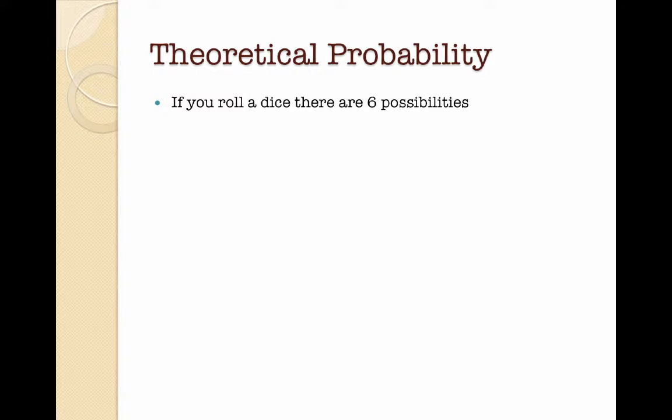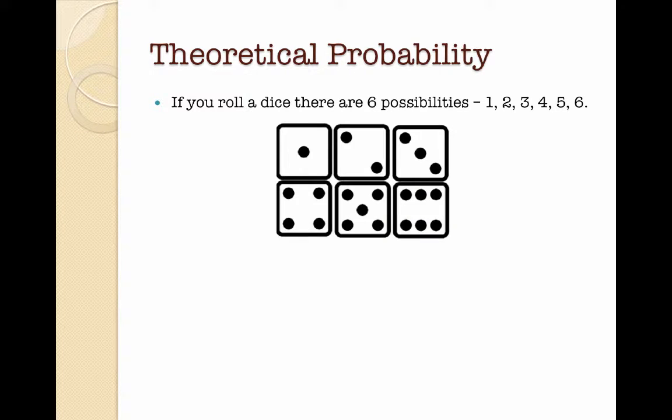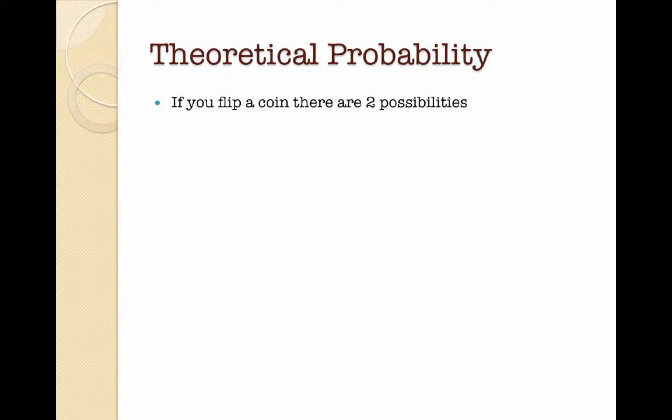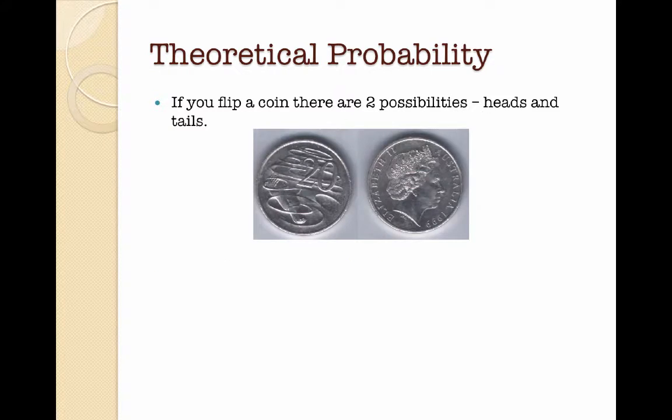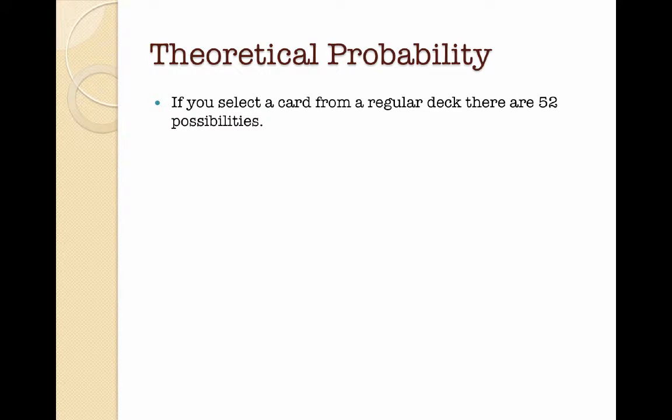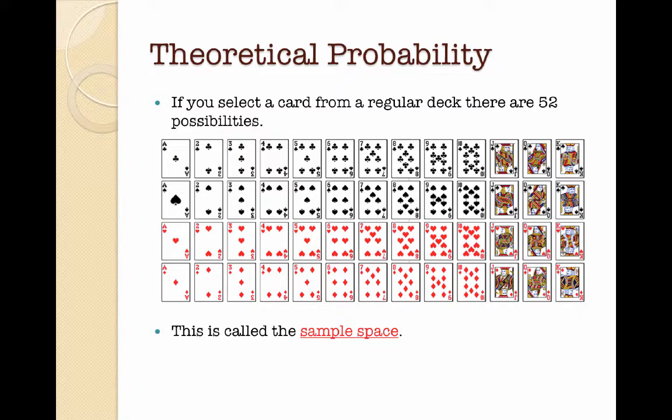If you were to roll a dice, there are 6 possibilities: 1, 2, 3, 4, 5, 6. This is called the sample space. If you flip a coin, there are only 2 possibilities, heads and tails. This is also called the sample space. If you select a card from a regular deck, there are 52 possibilities. All of this is called the sample space.